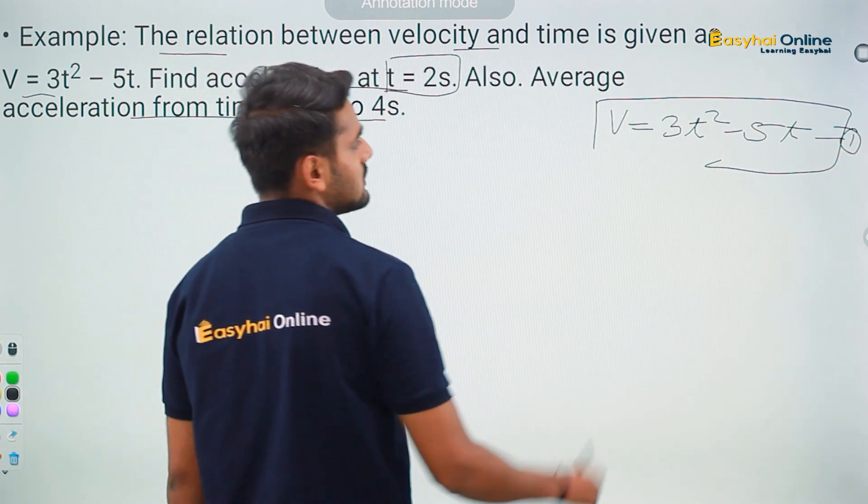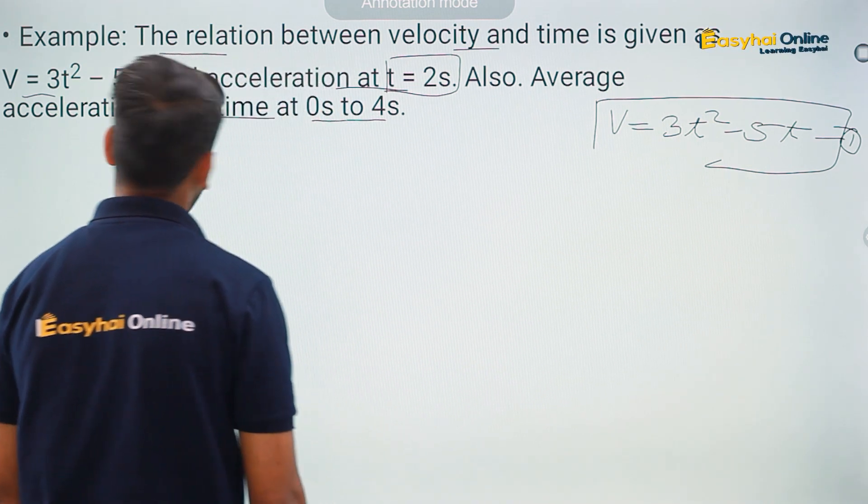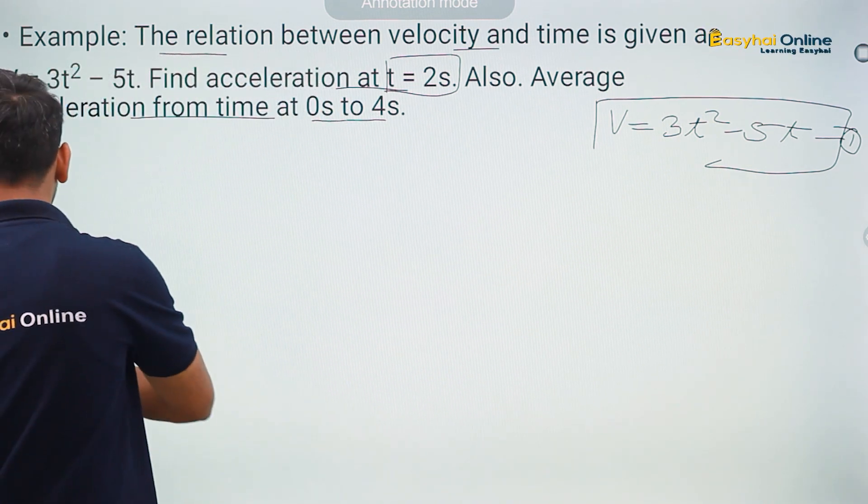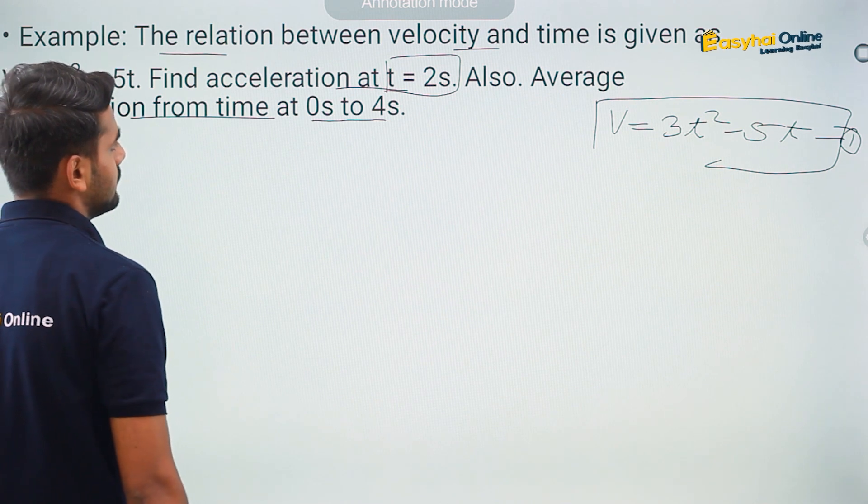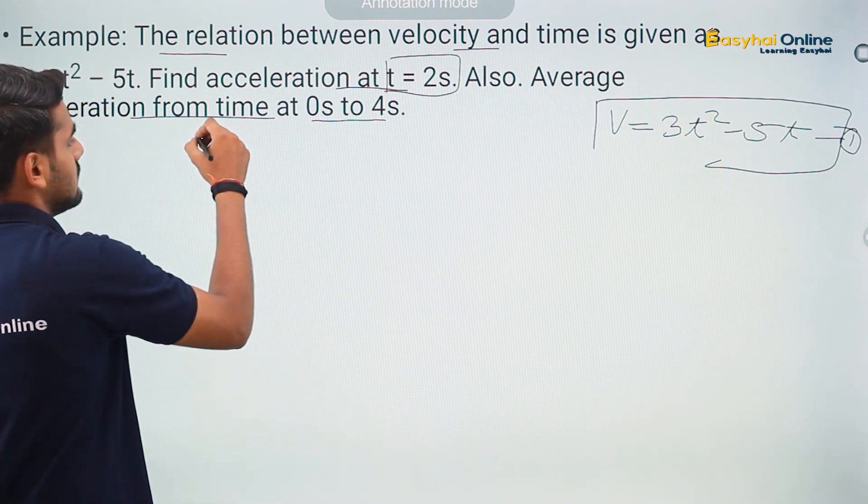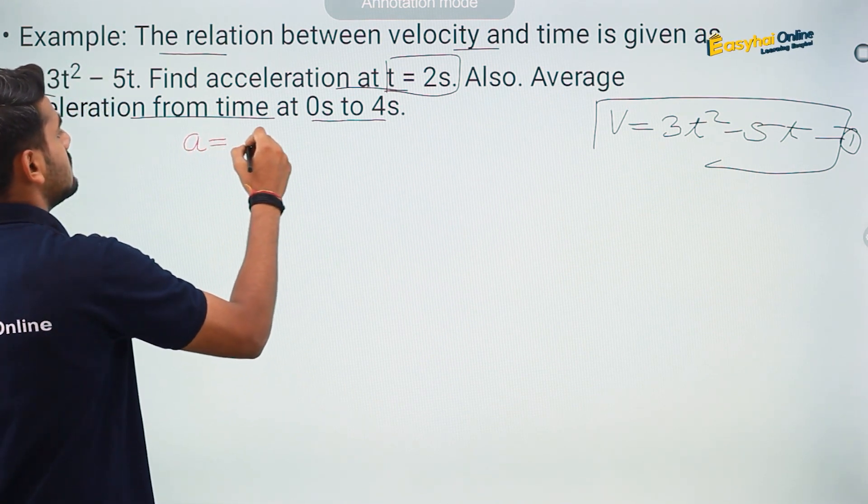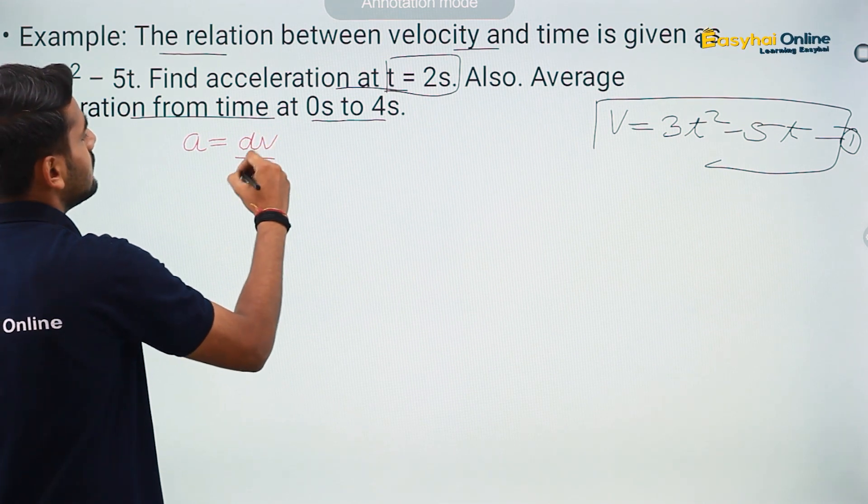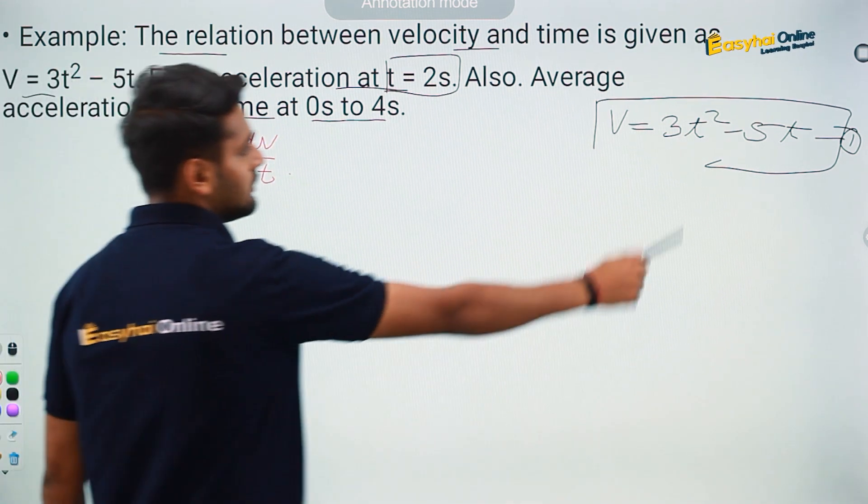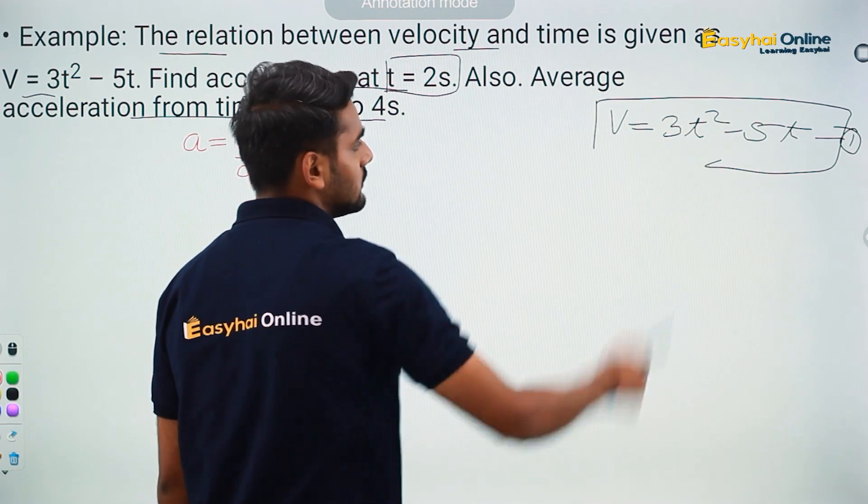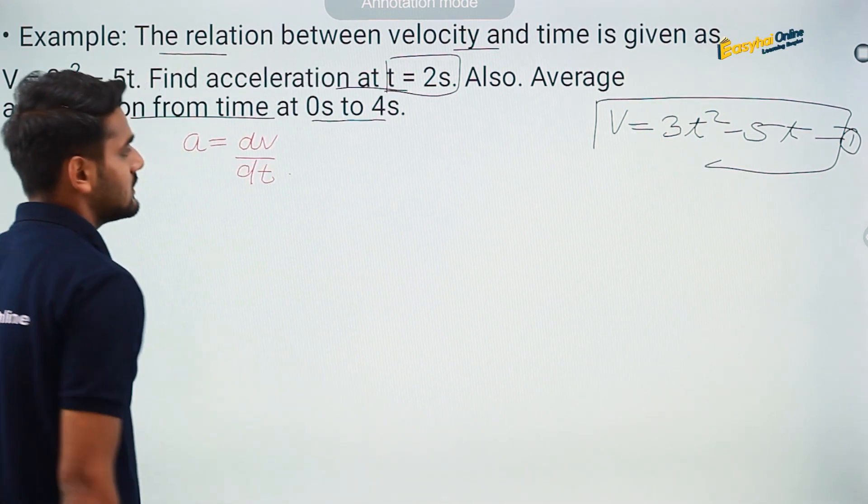Now, when I have this equation 1 which is 3t square minus 5t and I want to calculate the acceleration, I know that acceleration a is equal to dv by dt. Yes or no?